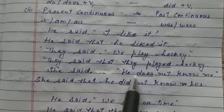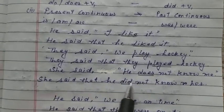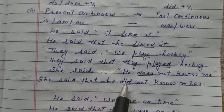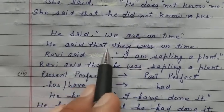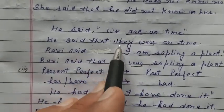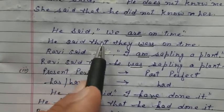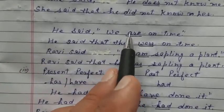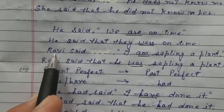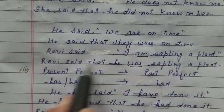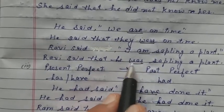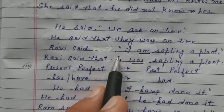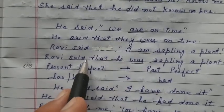For example: 'She said he does not know me' changes to 'She said that he did not know me' — does changes into did. 'He said we are on time' changes to 'He said that they were on time.' Pronouns change as we studied yesterday. Is or are changes into was or were. For example: 'Ravi said I am sapling a plant' changes to 'Ravi said that he was sapling a plant.' Is or are changes into was or were; the verb itself does not change. This is present continuous changing into past continuous.